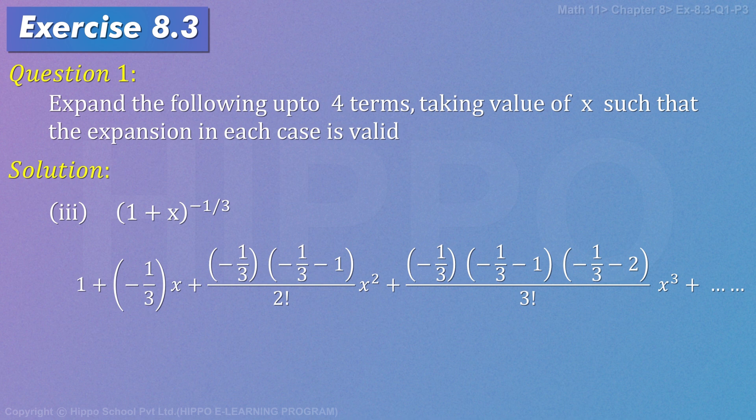ab likhna hai n n minus 1 n minus 2 by 3 factorial to minus 1 by 3 minus 1 by 3 minus 1 minus 1 by 3 minus 2 by 3 factorial x cube plus so on which is equal to 1 minus 1 by 3 x plus ab minus 1 by 3 minus 1 in ka lcm n n kalehenge n johan sir ayaga us ko minus 1 by 3 sa multiply kurvayen aur us ko divide ka dhe 2 say ayaga plus 2 by 9 x square